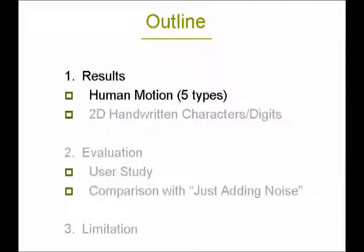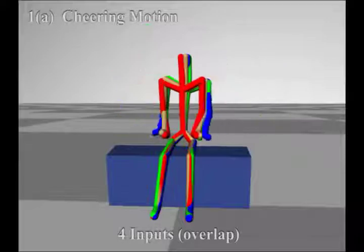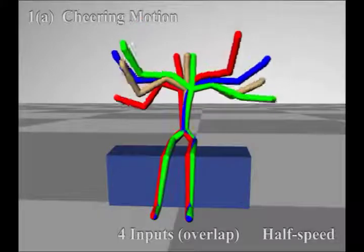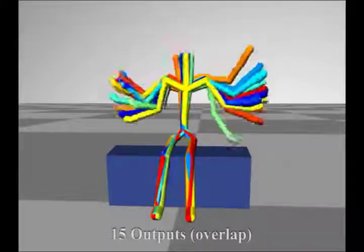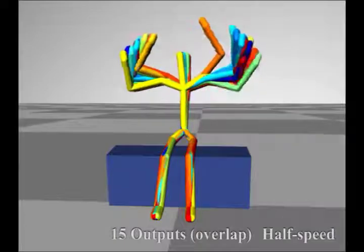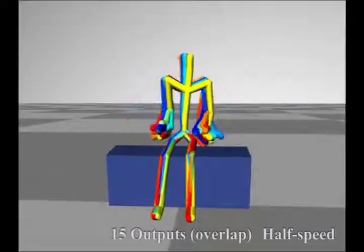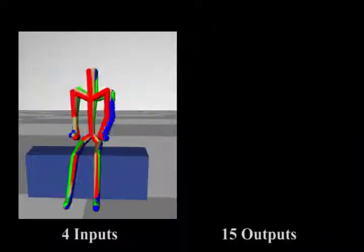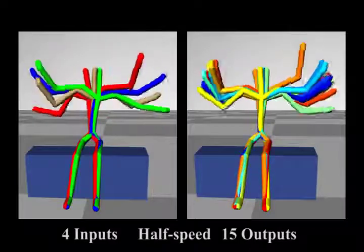We show results for five types of human motion. The inputs are similar to each other, but slightly different. The outputs are similar to the inputs, but are not exact copies. Note the spatial and temporal variations in the outputs.